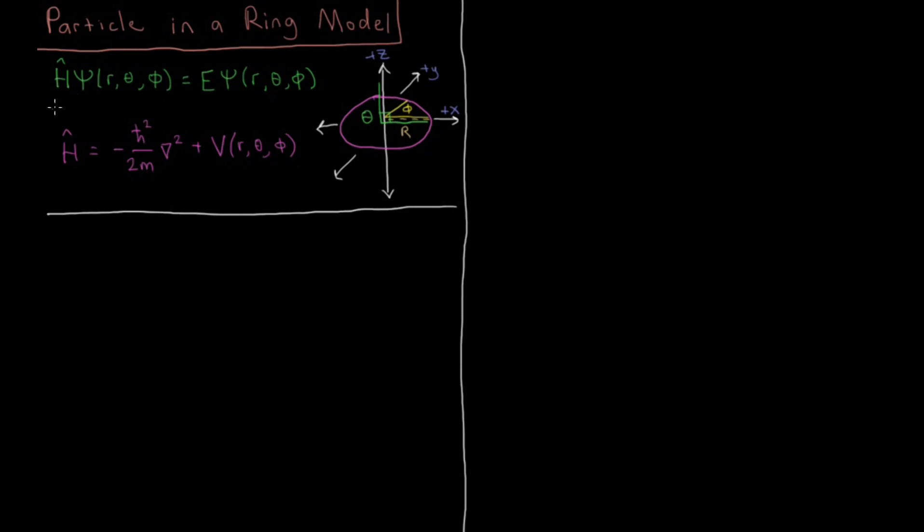So for this model system we're going to be looking to solve the Schrödinger equation as always, H ψ equals E ψ. And there are several ways to derive how we get to the one dimensional form of the system. But I'm going to start with the 3D system and basically boil that down to the 1D system and hopefully we'll learn some things about separation of variables and those sorts of things along the way.